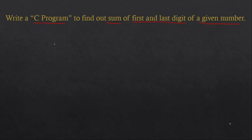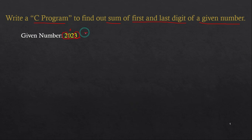Let's say you have the number 2023. You are interested in finding out the sum of the first digit and the last digit of this number. The first digit is 2 and the last digit is 3, and the sum of these two numbers will be equal to 5.